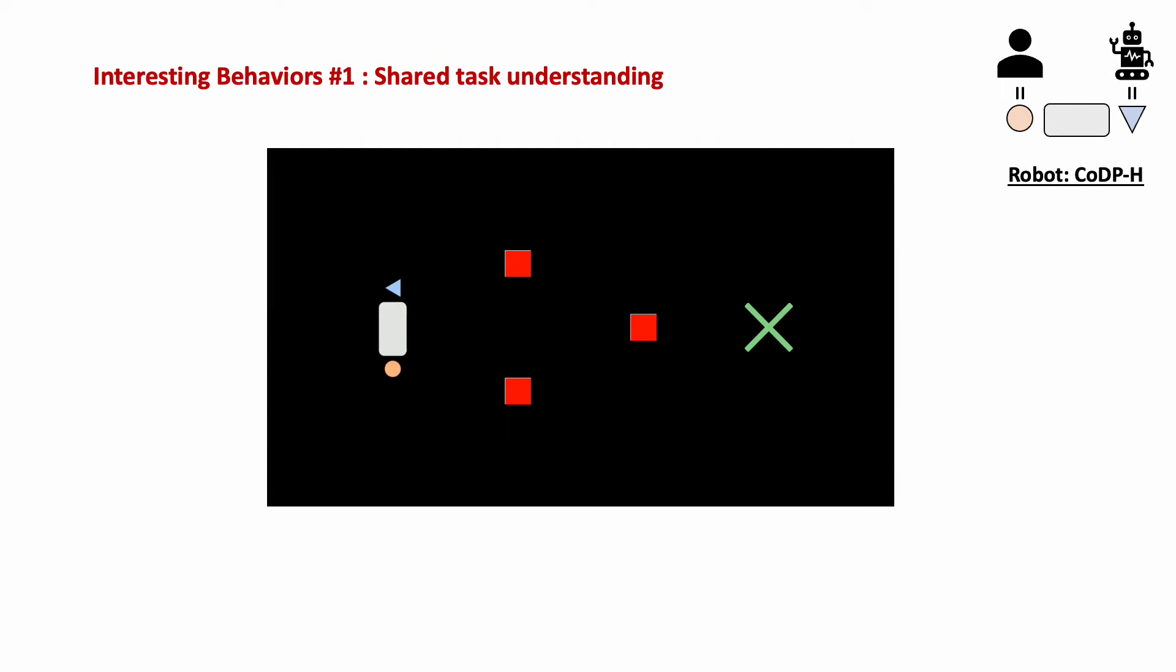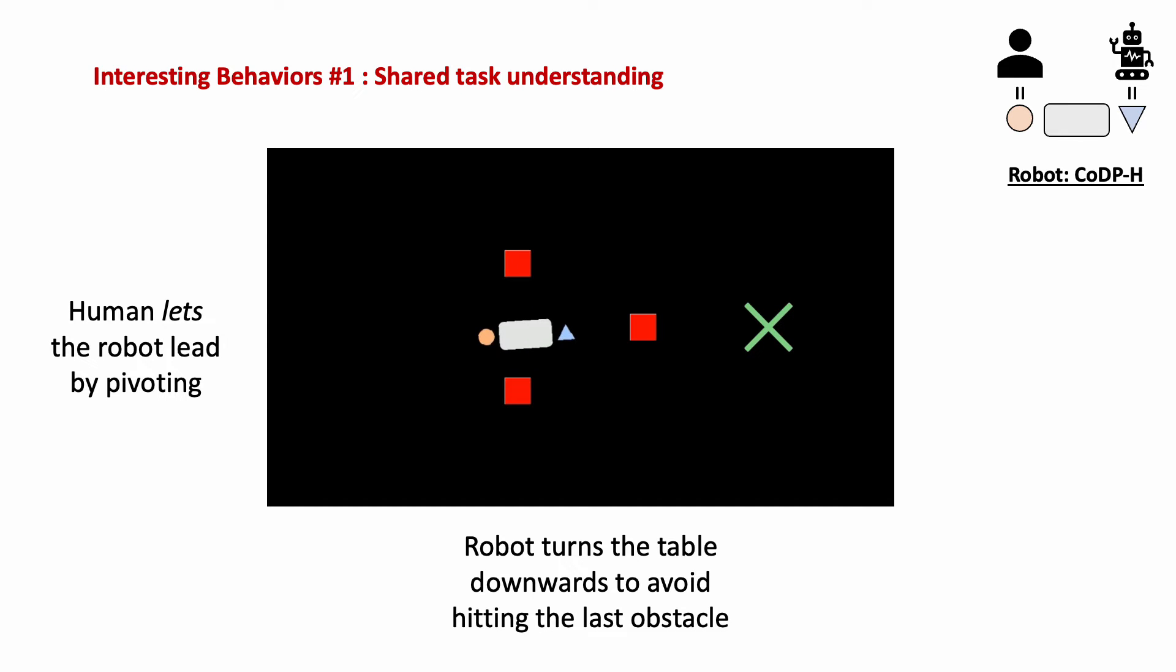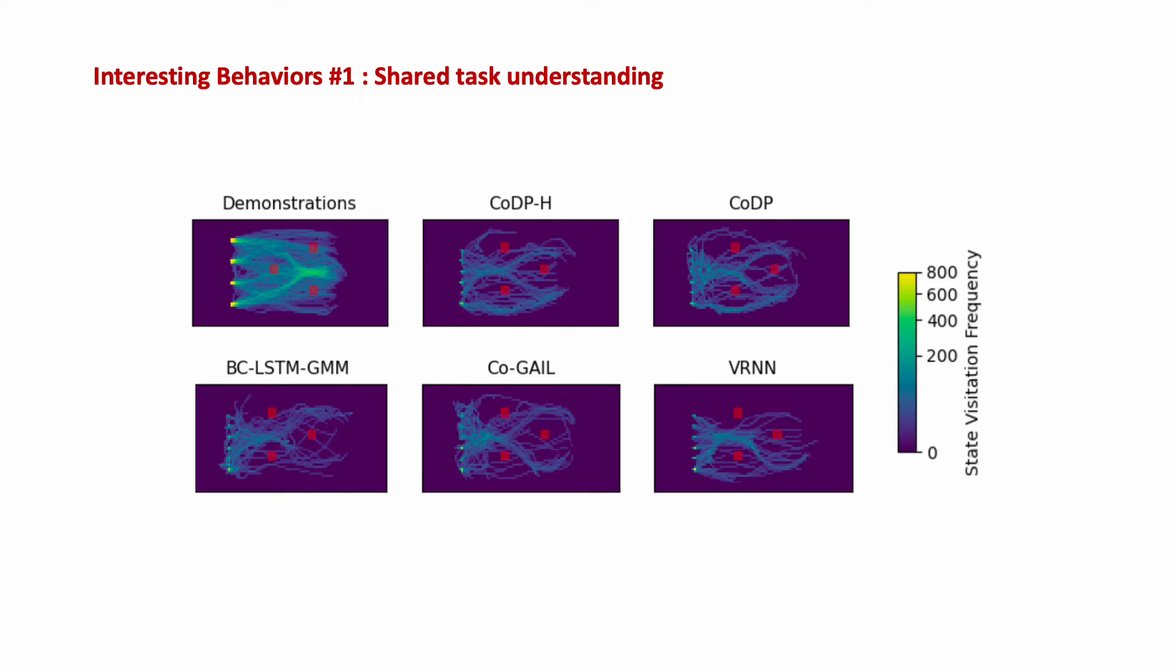We highlight some interesting behaviors. In this first example, diffusion co-policy demonstrates an understanding of the task on unseen map configurations. Here, the human begins by pivoting to let the robot lead. Next, the robot turns the table to avoid hitting the obstacle. And finally, the robot avoids colliding with the wall by acting as a pivot for the human. Furthermore, we see overall greater map coverage by the diffusion policies in the novel unseen map test setting.